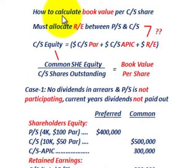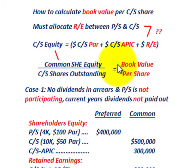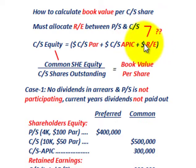What we're going to be looking at is how do we calculate the book value per share of common stock. The key here is that you must allocate the retained earnings between the preferred stock and the common stock. The general equation is: common stock shareholders' equity divided by the number of common stock shares outstanding. Common stock shareholders' equity equals the common stock's par value plus additional paid-in capital plus the portion of retained earnings assigned to common stock.